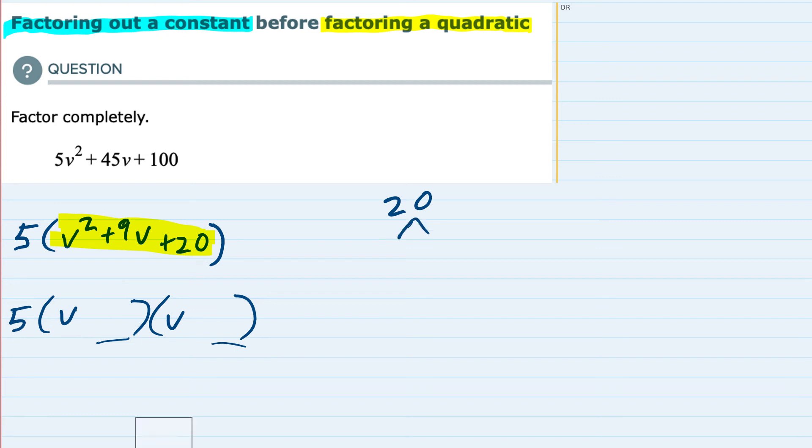For these two numbers to multiply and give me 20, it would either have to be a 1 and a 20, a 2 and a 10, or a 4 and a 5. Those are all of the possible numbers that would multiply to give me 20, but I also need them to add up to 9.